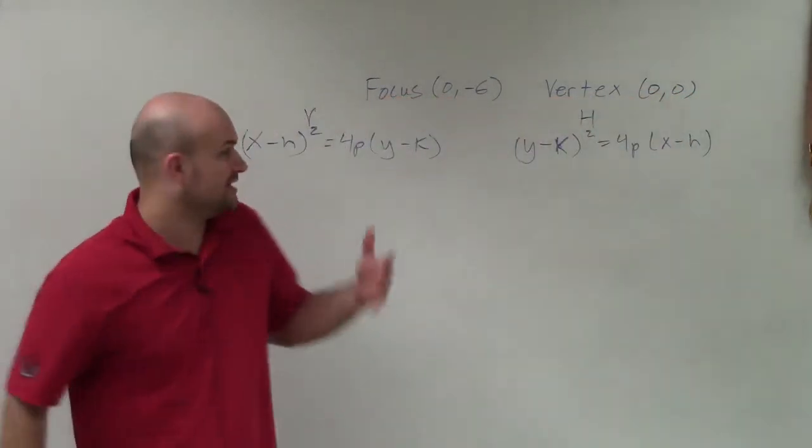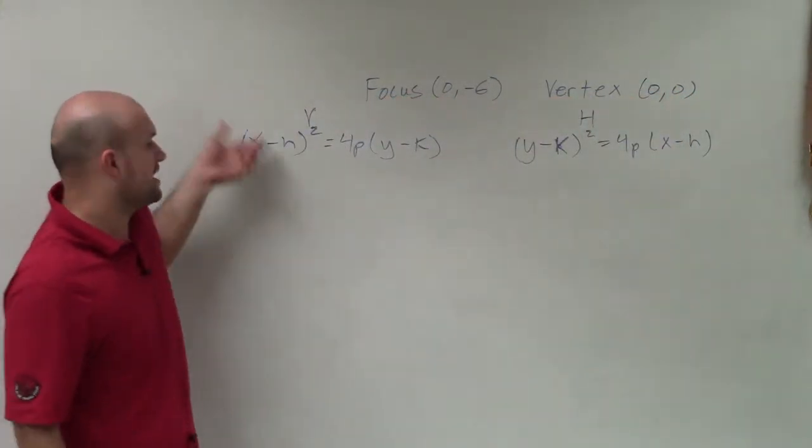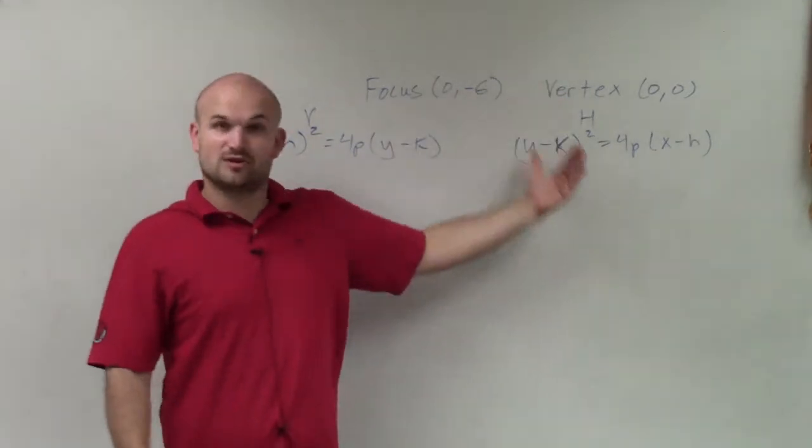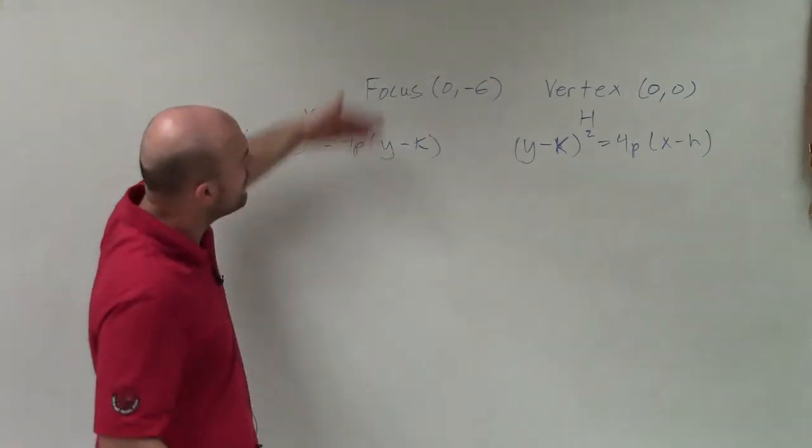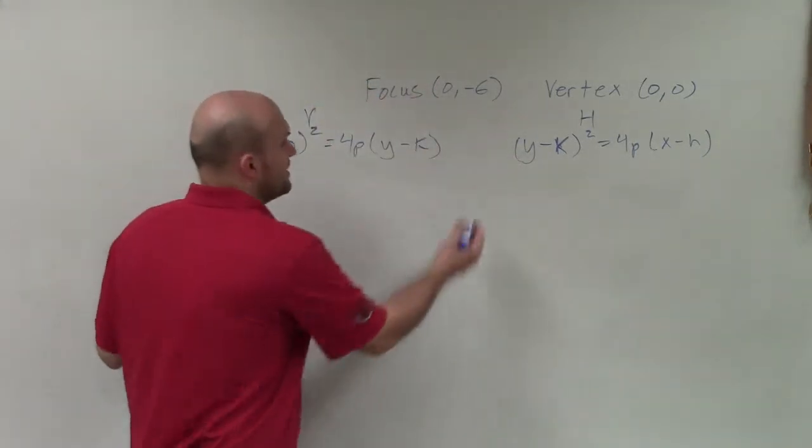The difference is that in the vertical axis symmetry, we have x squared, and in the horizontal, y squared. To determine where the axis of symmetry is, I want to plot the points and information that I'm given.